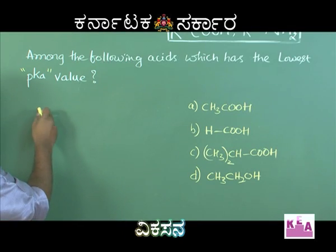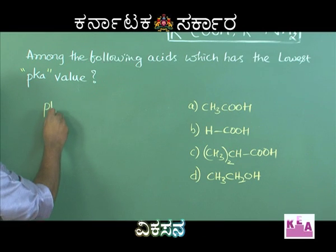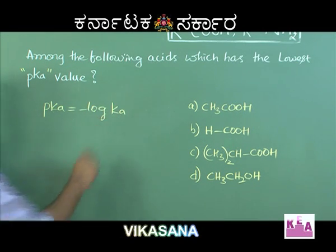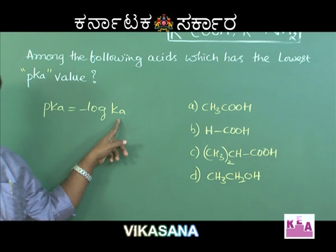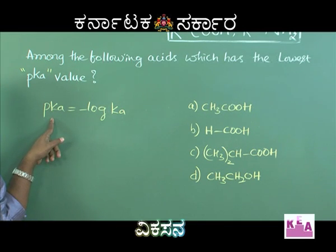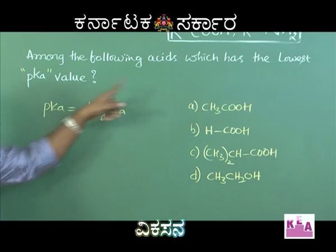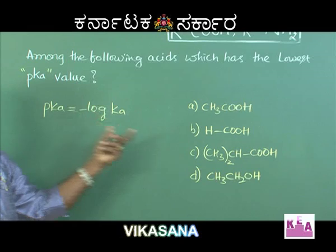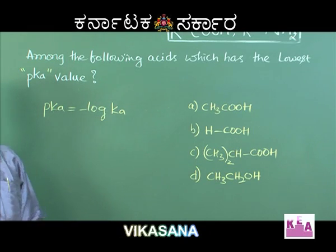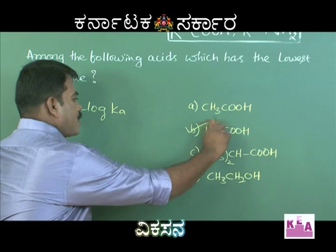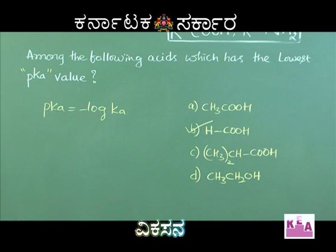Ka and pKa are inversely related: higher Ka means stronger acid; higher pKa means weaker acid. Among the options, the acid with the lowest pKa is the strongest acid, which is methanovic acid or formic acid. Therefore, option B is the correct answer.